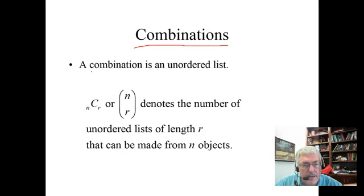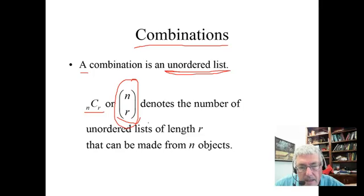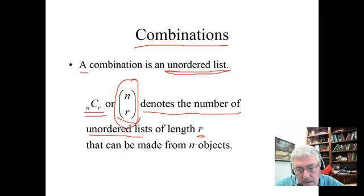Combinations. A combination is an unordered list. NCR, which can also be denoted by this, we read this as N choose R. And there is not supposed to be a little line there. This isn't a fraction N divided by R. This is N choose R. It's just a symbol as we have it here. It denotes the number of unordered lists of length R that can be made from N objects.